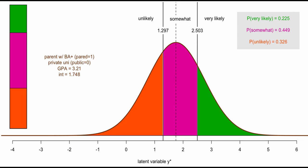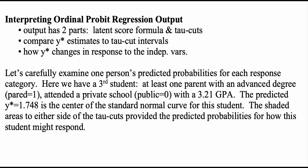The probability of this student responding somewhat likely is the area under the curve from 1.297 to 2.503 when centered at 1.748 — about 44.9%. The area below 1.297 gives a probability of about 32.6% for unlikely, and there is still a non-negligible 22.5% probability of responding very likely. So while y* gives a point prediction, the model provides probability estimates for each category.